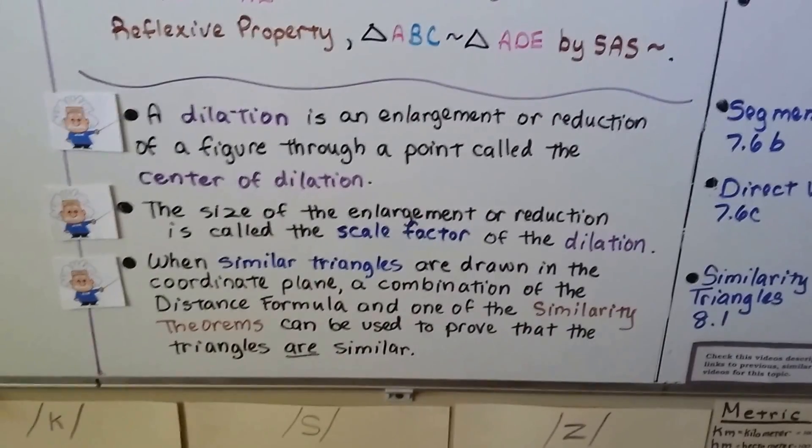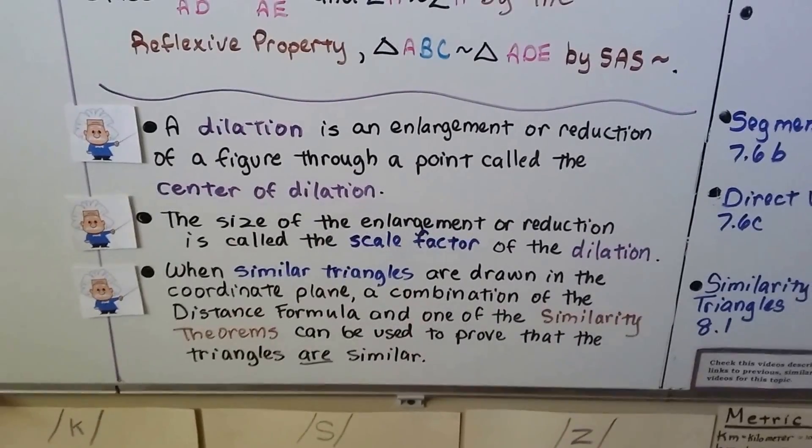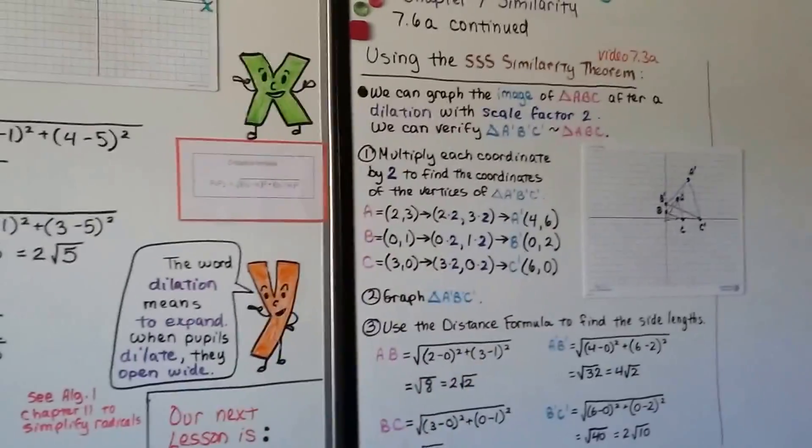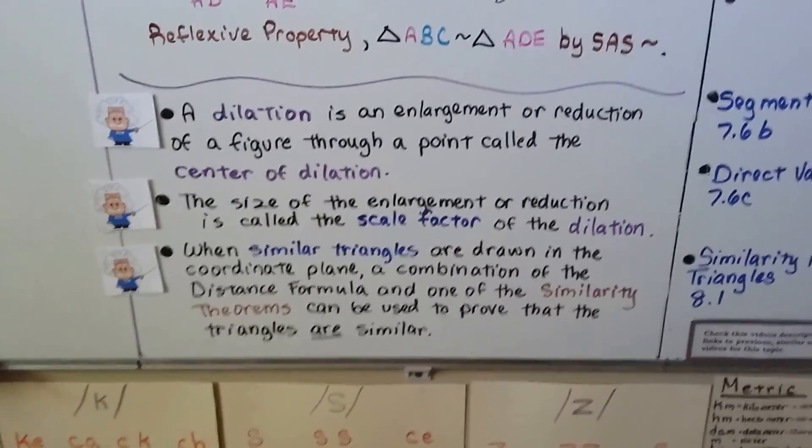When similar triangles are drawn in the coordinate plane, a combination of the distance formula and one of the similarity theorems—like side angle side similarity or SSS side side side similarity—can be used to prove that the triangles are similar.